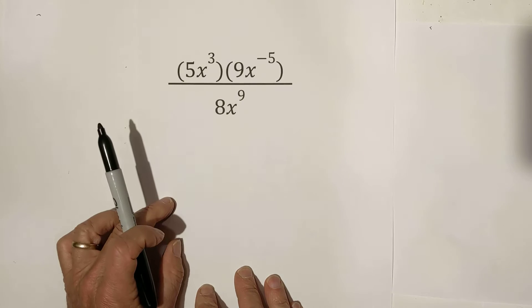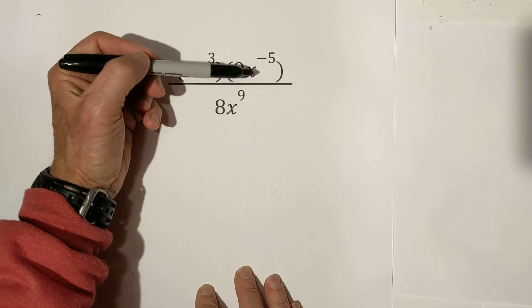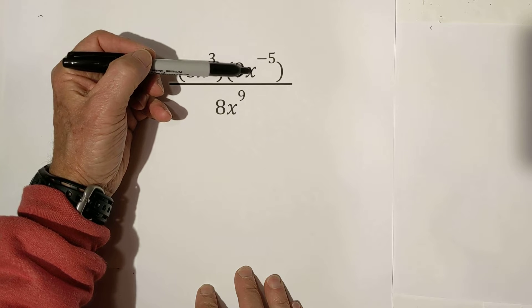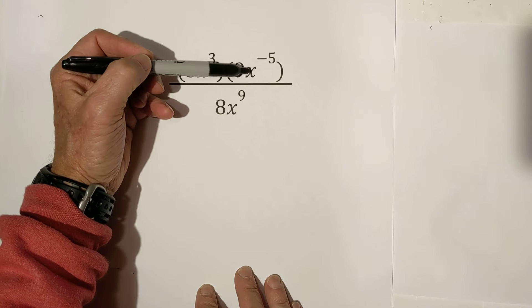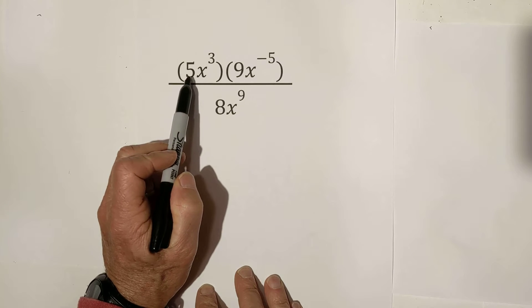First, we have this negative exponent and you cannot have a negative exponent, but you can get rid of it by moving whatever it's attached to, to the other, either upstairs or downstairs, or we'll need to move it below. So, let's work through this.